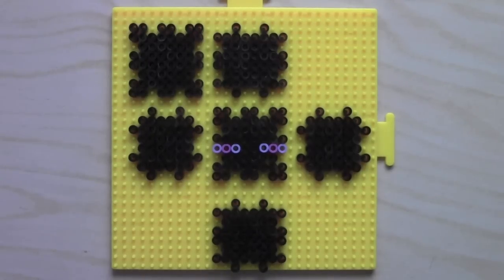Starting with the Enderman's head, this is the exact same design as the Steve and Creeper head. It's the same shape for all the pieces except Enderman is completely black with purple eyes.